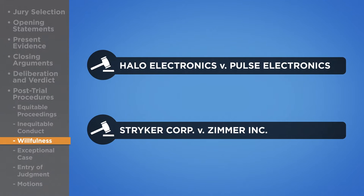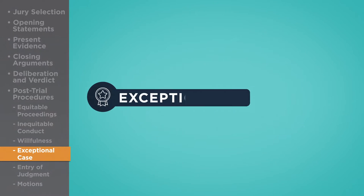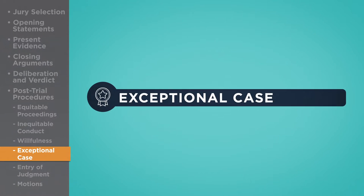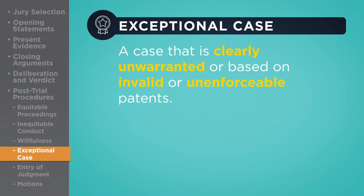Those rulings made it easier for patent owners to prove that a company's infringement was willful. Courts have discretion to award attorney's fees to defendants in a patent infringement case if it is deemed an exceptional case, meaning a case that is clearly unwarranted or is based on invalid or unenforceable patents. The Federal Circuit uses this provision as a means of deterring such lawsuits.